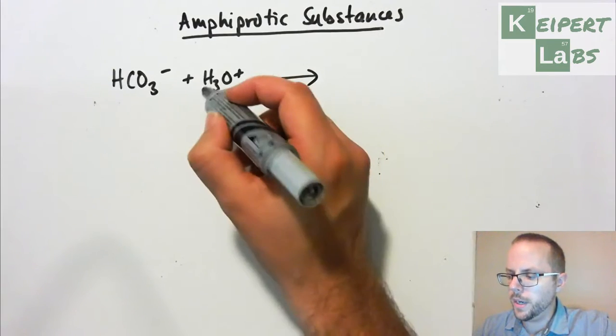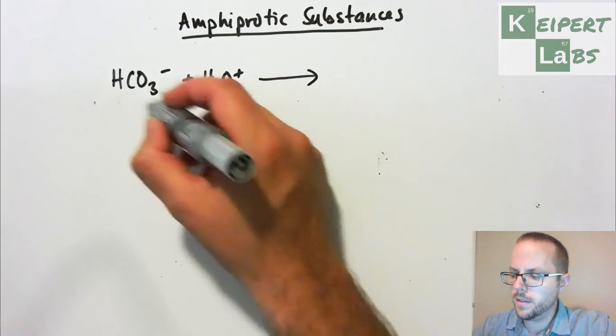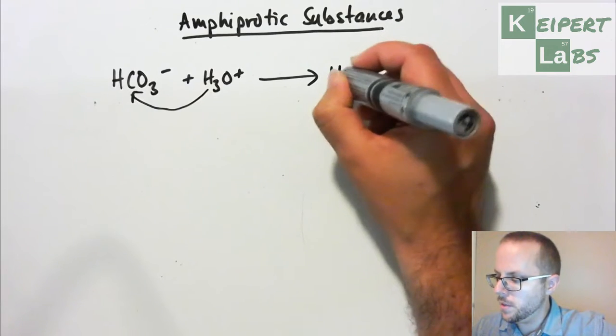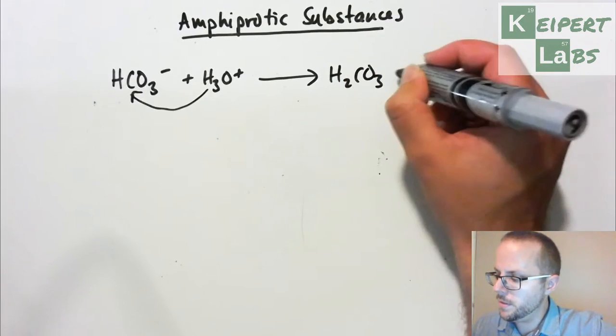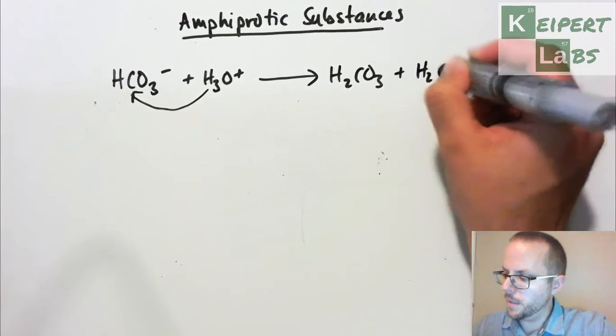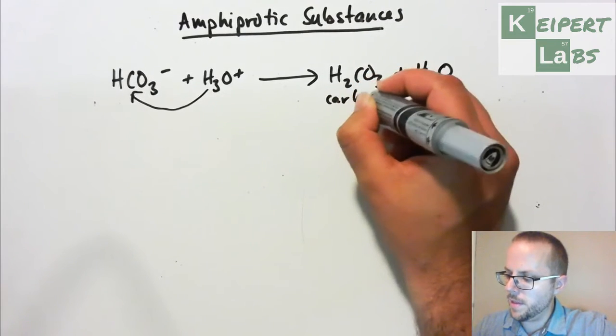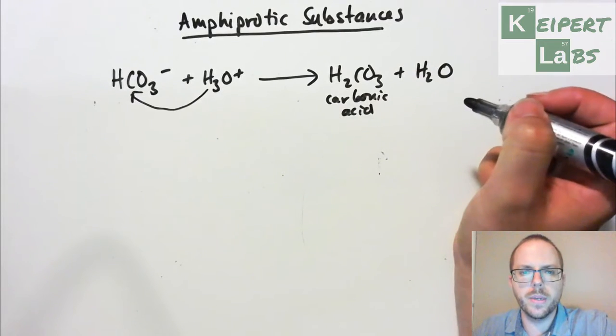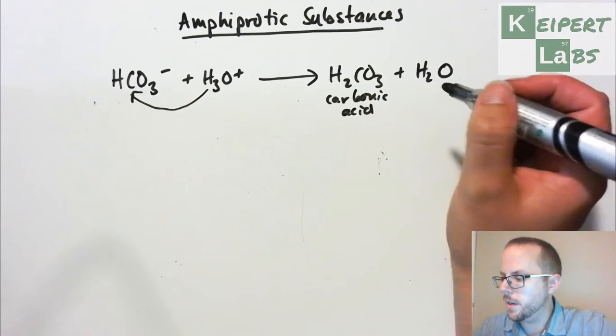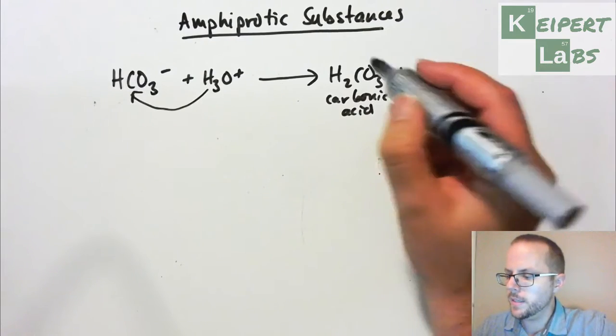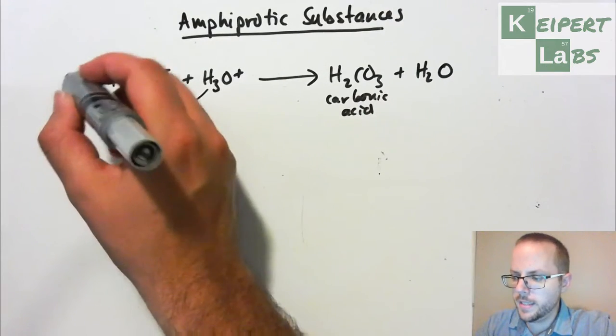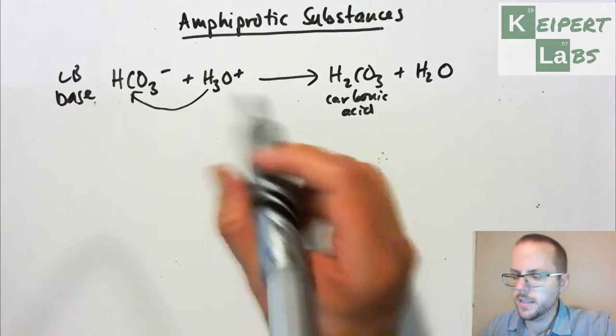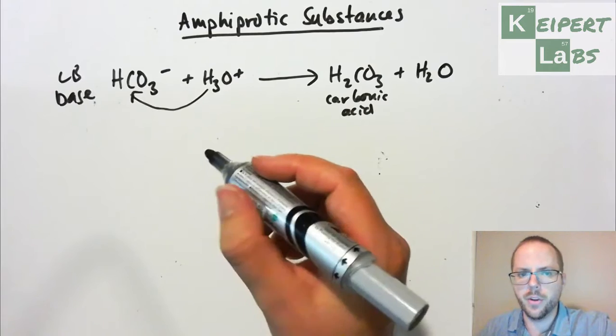So what we're going to get in this case, we're going to get it gaining or accepting a proton from our hydronium to form this substance, which is carbonic acid. Hopefully that would be a little bit more familiar to you by this point, when we looked at carbon dioxide equilibrium. So carbon dioxide, carbonic acid, and water. In this situation it's acting as a Lowry-Bronsted base. It's accepted a proton in order to undergo reaction.